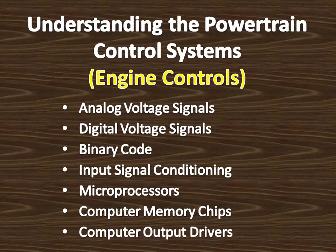Computer output drivers operate many different output controls such as relays and solenoids. The computer contains a number of drivers — single transistors that switch the output controls on and off. The microprocessor commands the drivers to operate the output controls. For example, if the ECT or engine coolant temperature sensor indicates the engine temperature is high enough to require cooling fan operation, the microprocessor commands the appropriate driver to ground the cooling fan relay winding. This action closes the relay contacts that supply voltage to the cooling fan motor.